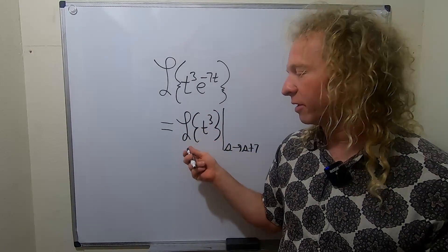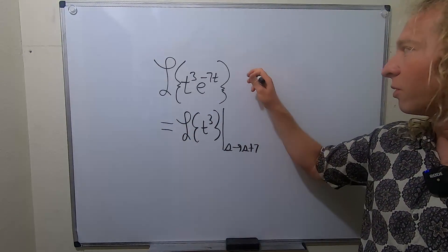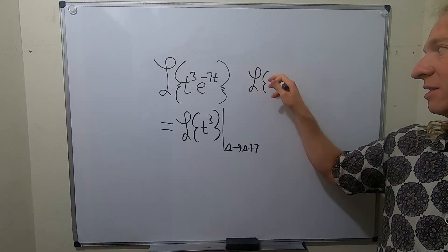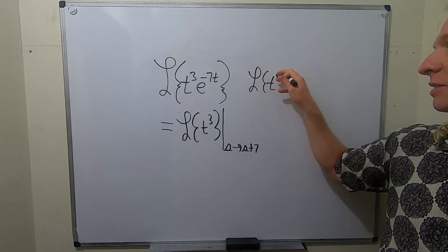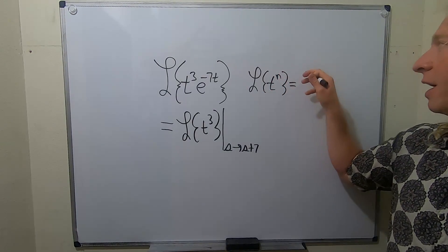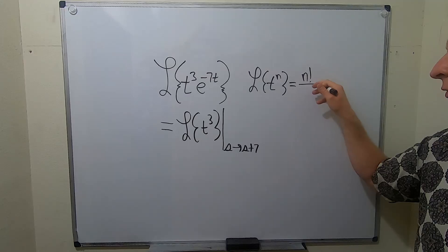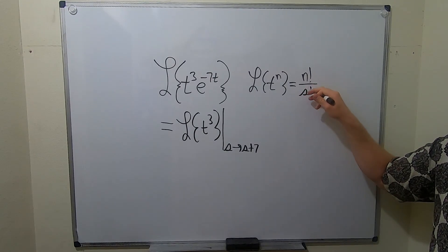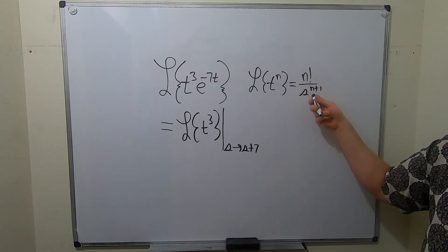Okay, so now we're going to use the formula for the Laplace of t cubed. Recall the Laplace of t to the nth power is given by the formula n factorial over s to the n plus 1. So it's always 1 higher on the bottom.